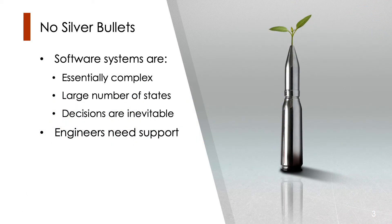When dealing with software systems, there are no silver bullets. Software systems are inherently complex and they have a large number of states. Engineers and architects have many options to choose from for different parts of their systems. Therefore, making decisions is going to be inevitable. Given the large number of states and the complexity of systems, engineers need support throughout this process.